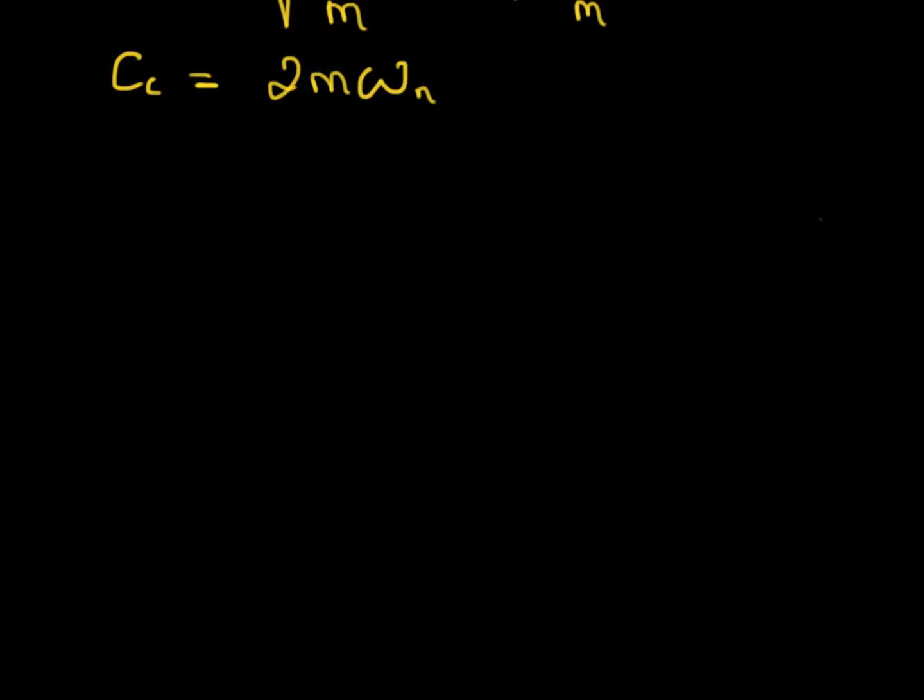Anyway, so we go back to our original equation, which said that MX double dot plus CX dot plus KX equals zero, and this was the equation of motion.